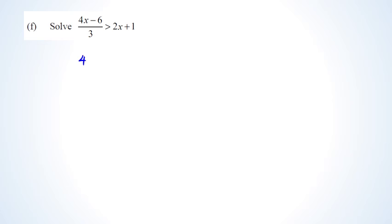We have an inequality. A quick reminder: you treat it exactly like an equal sign, and the only time you need to worry about the symbol changing is when you divide by a negative number. The first thing I'm going to do is multiply both sides by 3 to get rid of the denominator, so the two 3s cancel on the left-hand side, giving me 4x minus 6 is greater than...